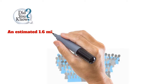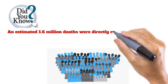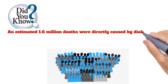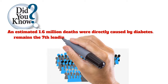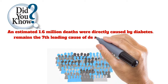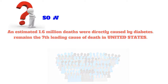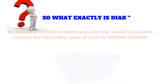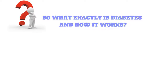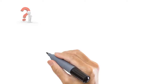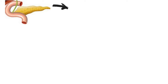An estimated 1.6 million deaths were directly caused by diabetes. It remains the seventh leading cause of death in the United States. So what exactly is diabetes and how does it work?